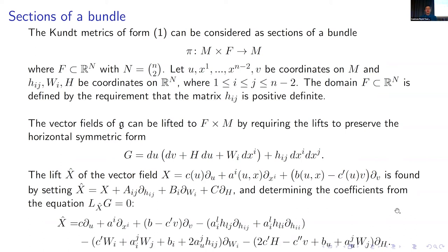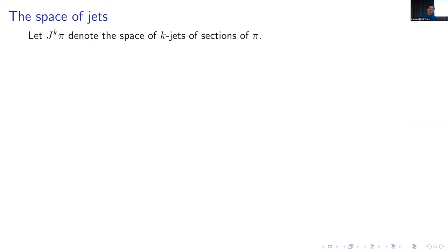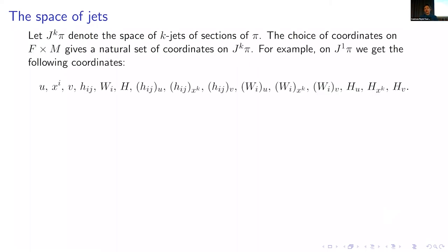The result is this nice formula for the action on the total space of the bundle. The notation is quite straightforward — only thing to explain is that α_{l,i} is the partial derivative of α_l with respect to x_i. These depend on derivatives of the parameters. Let J^k π denote the space of k-jets of sections of π, or the space of Taylor polynomials of degree k of the functional parameters of our metric.